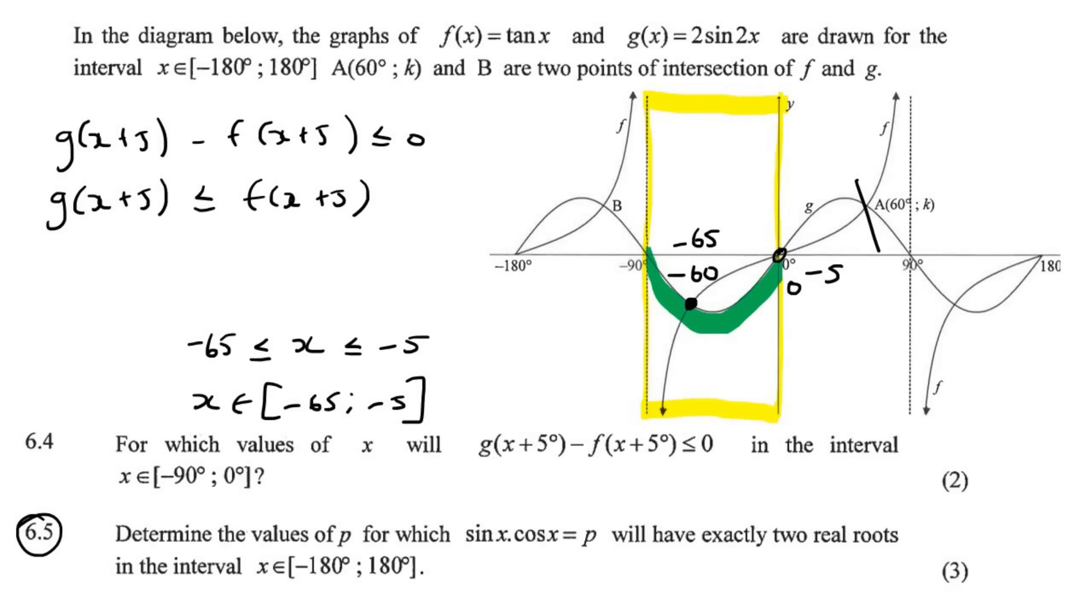This last one says, for three marks, Determine the values of P for which sin X cos X is equal to P will have exactly two real roots in the interval. Now, if you read that question and you're just like, I don't understand a thing, then you can leave that question out in the exam. If you're a student that is getting in the 40s, 50s, 60s, even the 70s, you don't have to attempt every single question. If you see a question like this that's got these ugly words like roots and blah, blah, blah, leave it out. I'm not saying leave out all questions, but especially these last kind of questions in a question like this. You've got to weigh up how long is it going to take you. And if it takes you too long, then you are going to decrease your chances of being able to do the questions after this successfully.